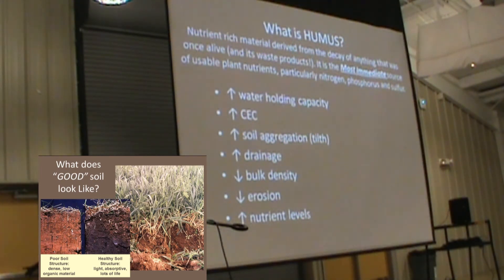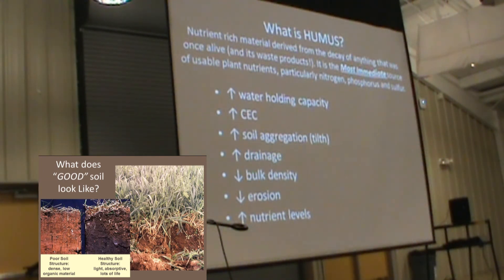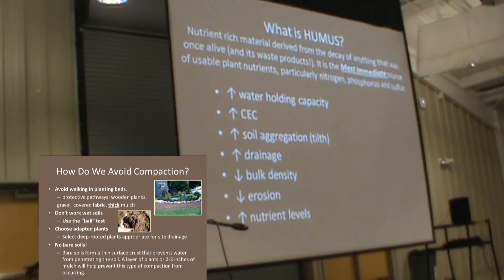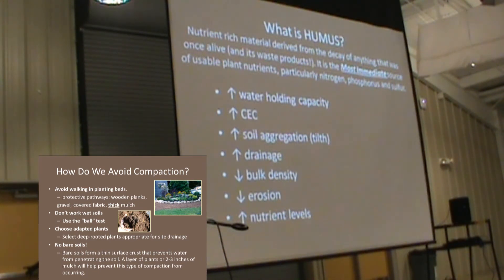Humus increases your water-holding capacity, increases your cation exchange capacity (CEC), improves your tilth — which is a feeling about soil that describes good texture and well-aggregated structure — and you're going to increase drainage, reduce bulk density, reduce erosion, and increase nutrient levels. Tilth is just a way of describing good-textured, well-aggregated soil. If there's air and it's good soil, you have good tilth.